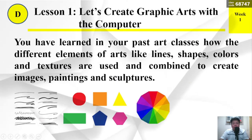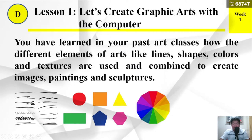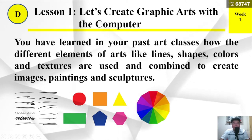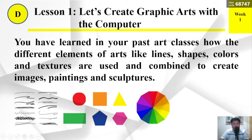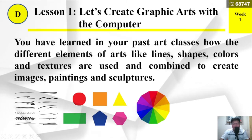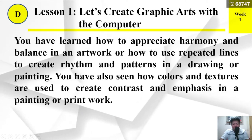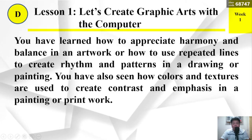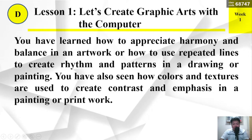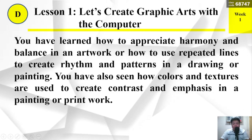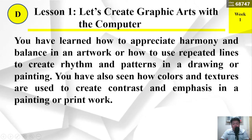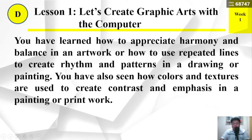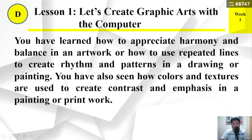You have learned in your past art classes how the different elements of arts — like lines, shapes, colors, and textures — are used and combined to create images, paintings, and sculptures. You have learned how to appreciate harmony and balance in an artwork, or how to use repeated lines to create rhythm and patterns in a drawing or painting. You have also seen how colors and textures are used to create contrast and emphasis in a painting or print work.